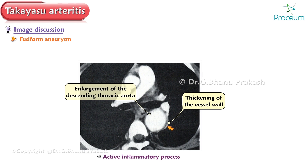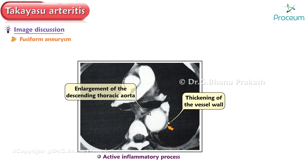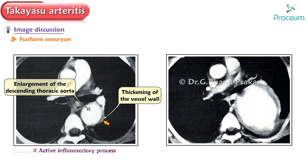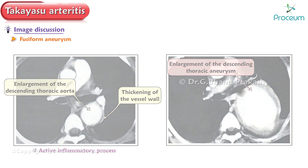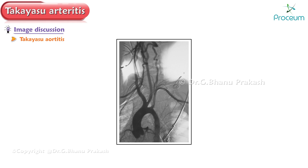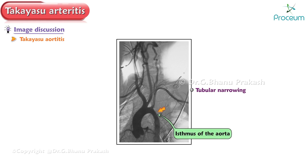These findings suggest an active inflammatory process. The third image shows a fusiform aneurysm where enlargement of the contrast-filled descending thoracic aneurysm has occurred despite treatment with glucocorticoids. The next image shows Takayasu aortitis on aortography in a 13-year-old female, where the aortogram shows tubular narrowing of the isthmus of the aorta, indicated by the arrow.